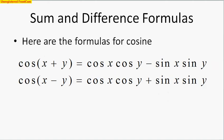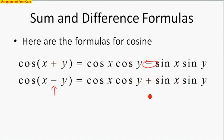Up next are the cosine formulas for cosine of addition and cosine of subtraction. These ones look a little different, so take major notes. You will be allowed to put these onto your formula sheet. Cosine of addition actually uses subtraction: cosine of x times cosine of y minus sine of x times sine of y. When you have cosine of subtraction, we actually use addition: cosine of x times cosine of y plus sine of x times sine of y.